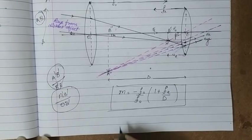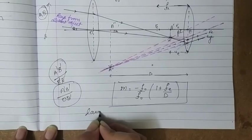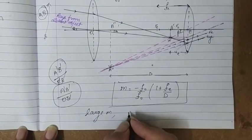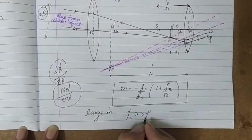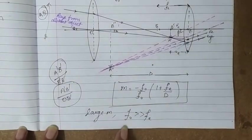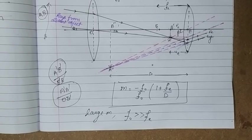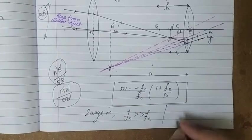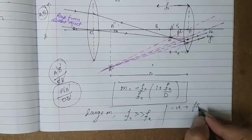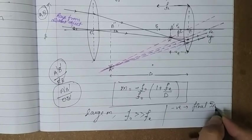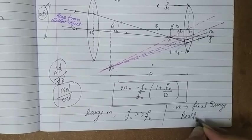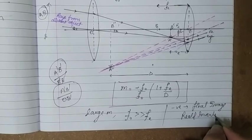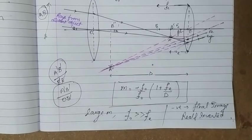For large magnifying power, the condition is that f₀ must be much greater than fₑ. The negative sign in the magnifying power indicates that the final image formed is real and inverted. This completes Case 1 of the working of the astronomical telescope.